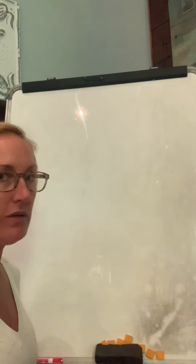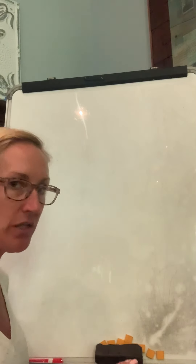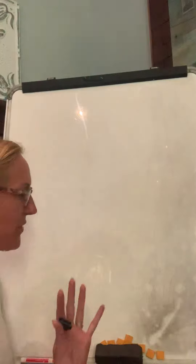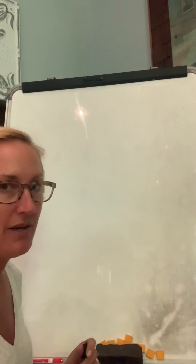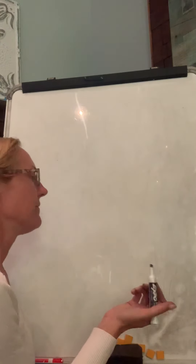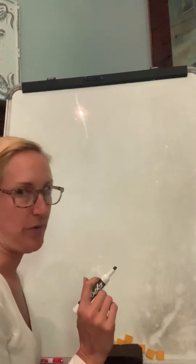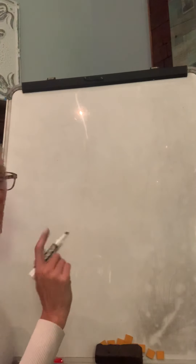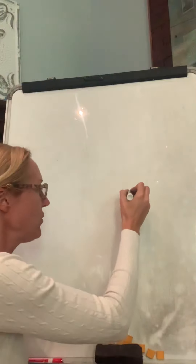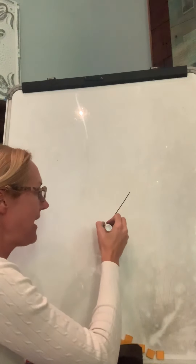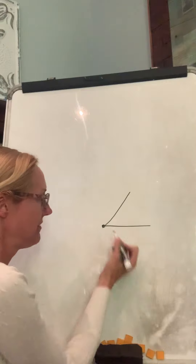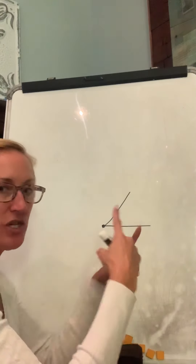Today let's do a little bit of review with angles and lines. We haven't done that for a couple weeks and I want to make sure it stays fresh with us. So let's review angles. Angles are when two lines come together and intersect.